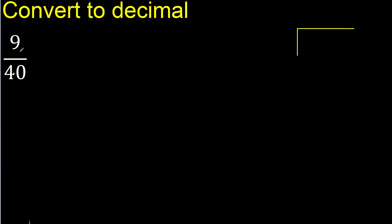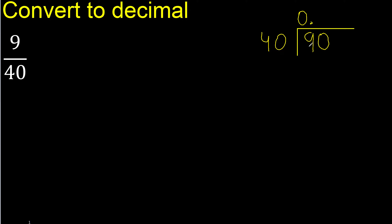9 divided by 40. 9 is less, therefore complete — always complete with 0. Here, 0 point. 90 is not less than 40.